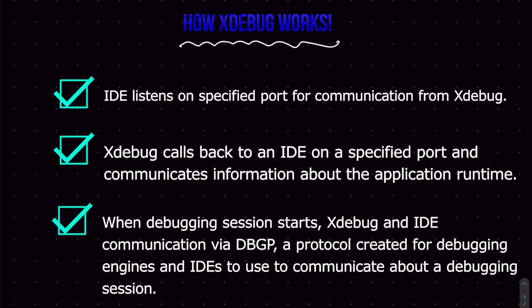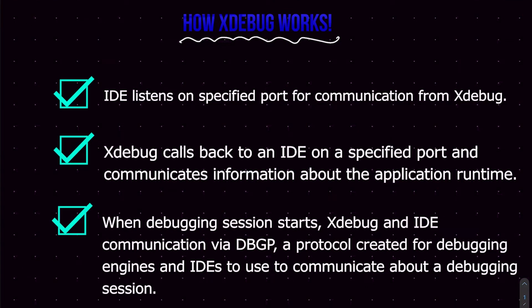Once a debugging session starts, Xdebug and the IDE begin to communicate via the DBGp protocol. This protocol was created to allow debugging engines and the IDE to communicate and transfer information about the application runtime. The main steps are: first, the IDE starts to listen on a specific port — 9000 or 9003; second, Xdebug calls back the IDE on that port; then the IDE and Xdebug transfer data through the DBGp protocol, created specifically for the debugging process between debugging engines like Xdebug and your IDE.